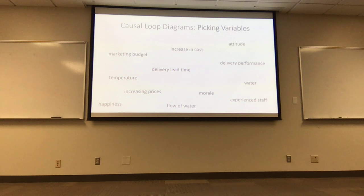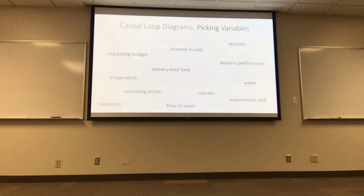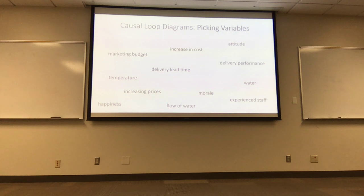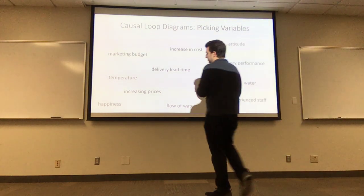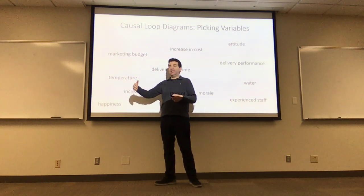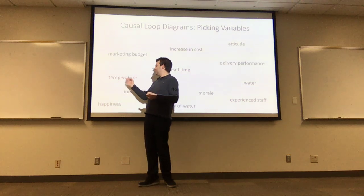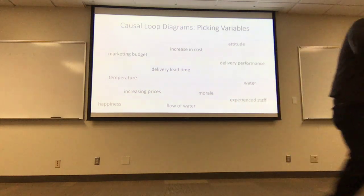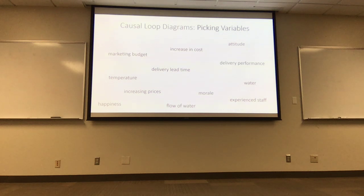Let's bring it back in. Does anybody have strong opinions about any one of these words — whether it's a very good causal diagram variable or a very bad one? A student says: temperature is a great one. Temperature is very measurable. It's a noun, and clearly things can have a higher or lower temperature. If you give me something hot and something cold, I can say this hot one is hotter than the cold one — I can sort them. So temperature seems like a good one. Another student notes: 'increasing prices' is probably a bad one because it's directional already.